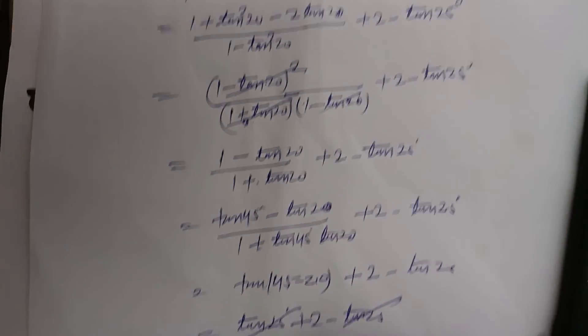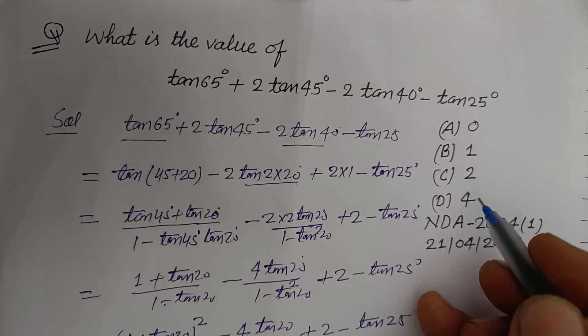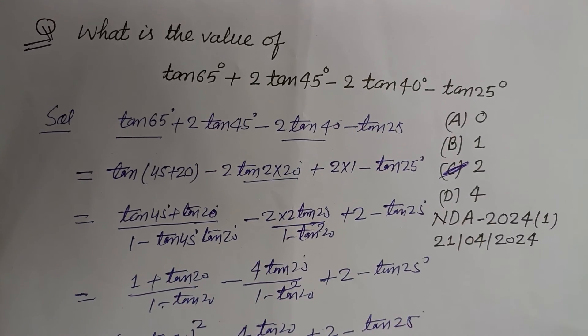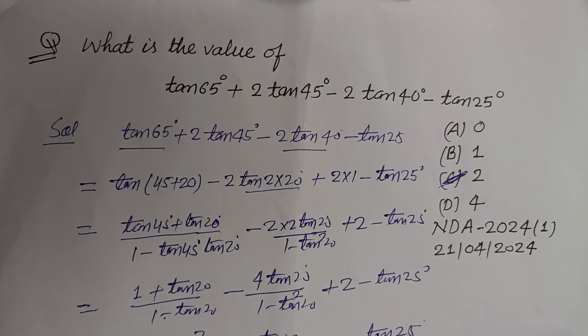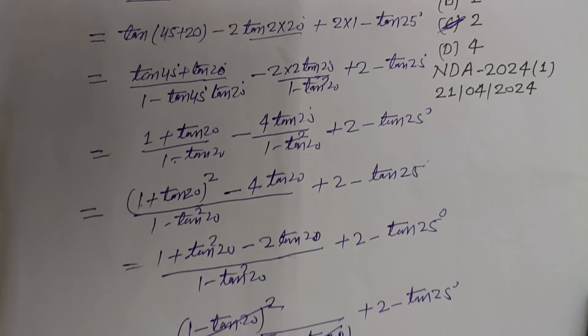This becomes tan25° + 2 - tan25°, so these cancel out. 2 is the correct answer, which is found in option C. Therefore, option C is correct. I hope you got it. Please like the video, subscribe the channel. Thanks for watching.